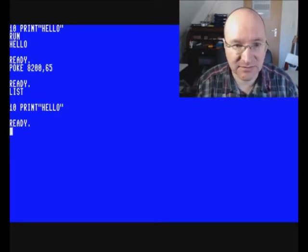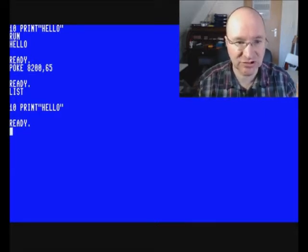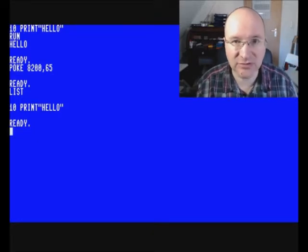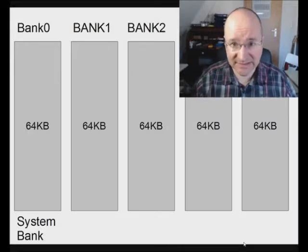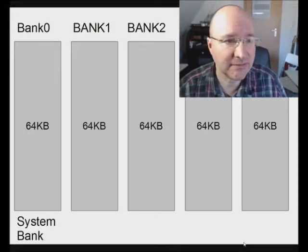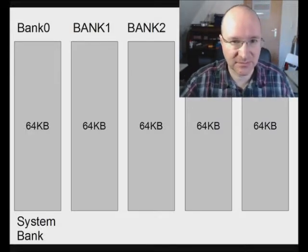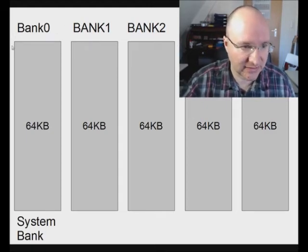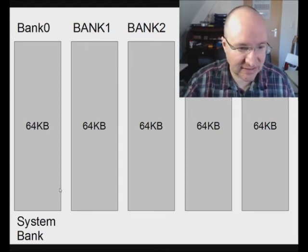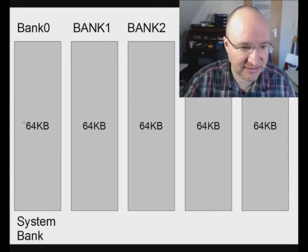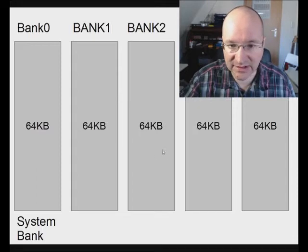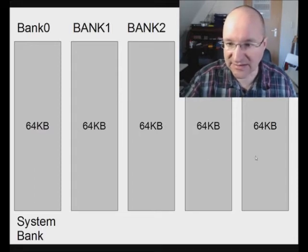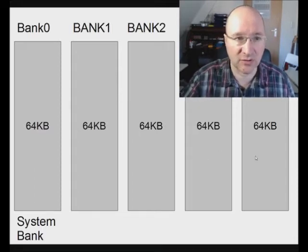This is because we are poking into the wrong 64-kilobyte block. To understand this we need to look at how memory is organized in the Commodore 65. The CPU itself can only access 64 kilobytes, so memory is organized in 64-kilobyte blocks called banks.